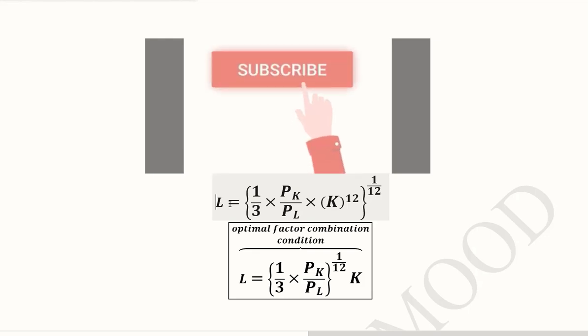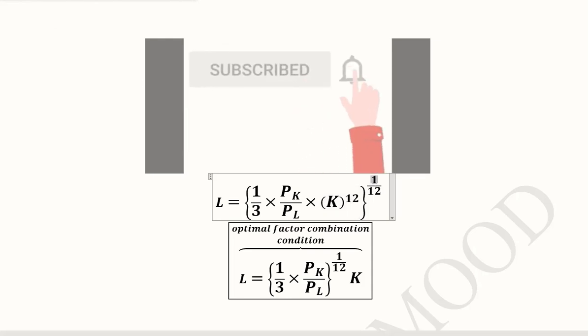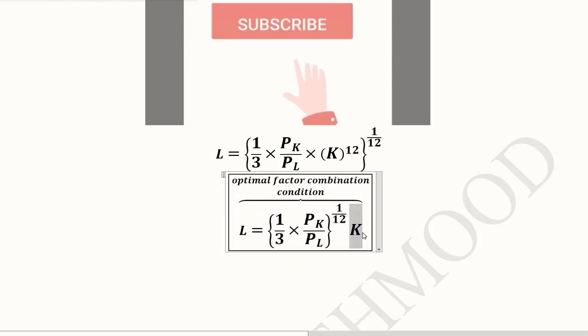Now we are going to reciprocalize this term so that its part becomes positive. Now we can extract the value of labor from here. Labor is extracted out, and for this K to the power 12, it got canceled out by the whole part 1 over 12, so K comes outside because of the cancellation of the powers. This is the expression of labor in terms of capital and prices of the two inputs, that is PK and PL. This is also known as the optimal factor combination condition.